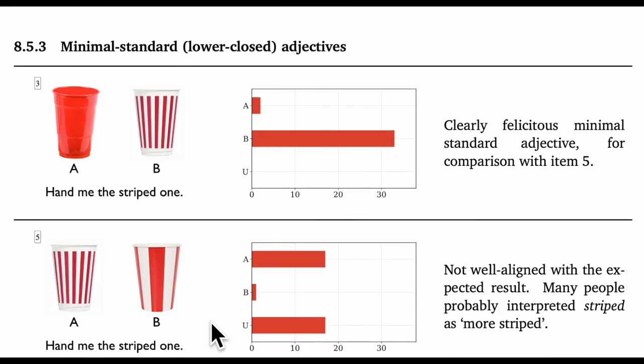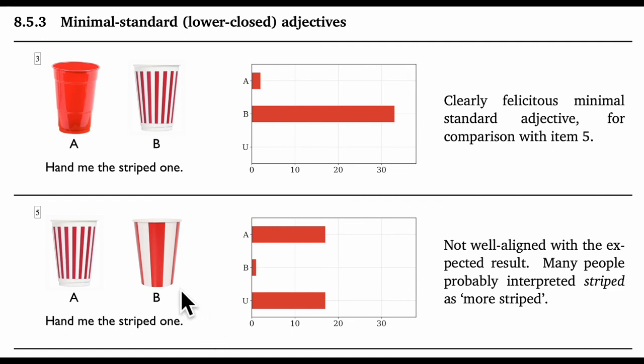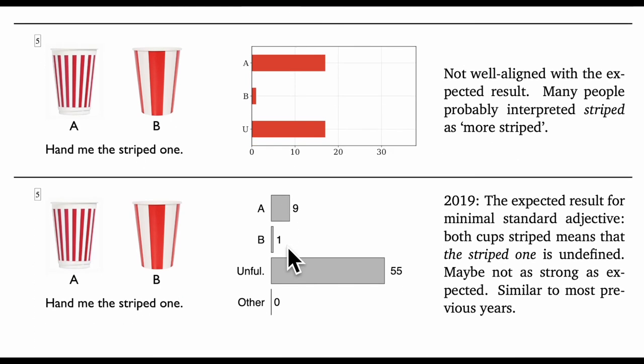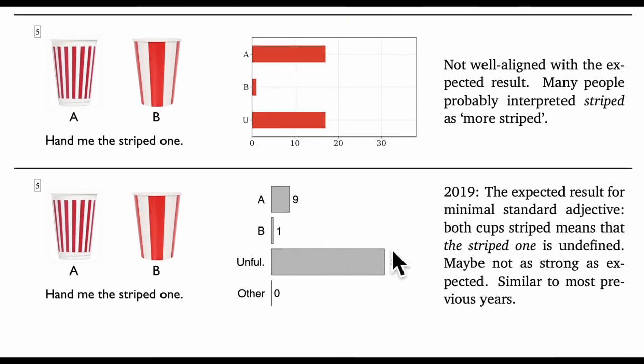Next, we turn to striped. My expectation was that striped would be lower closed. Even a few stripes make something striped, and you can say things like slightly striped and somewhat striped. Okay, but the responses don't really align with that. In a display with two striped cups, the response request unfulfillable was chosen by only about half of participants. The other half did something that is at least consistent with them interpreting striped as maybe more striped, which is a construal that Syrett et al. are actually at pains to argue doesn't arise. So this is intriguing. For what it's worth, when I did this in 2019, I did see the expected pattern. With the same display, almost everyone went for unfulfillable. I don't have an explanation for this variation, though.